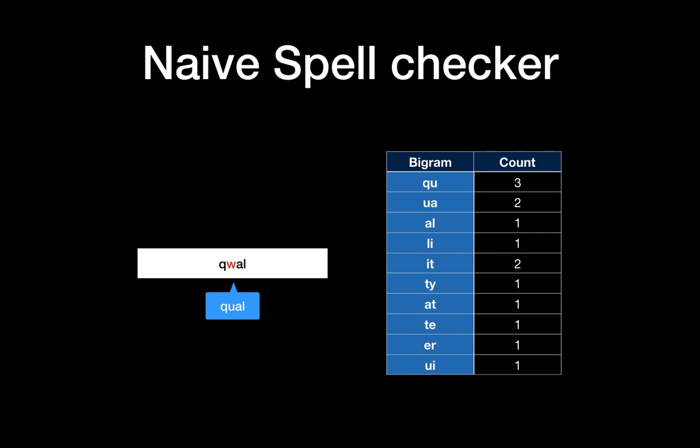From your data, from your knowledge base, there is no 'qw' and there is no 'wa,' but there is 'qu' with count three and 'ua' with count two. So you can suggest, 'Hey, you better use qual instead of qwal here.' That's one way of the naive spell checker.